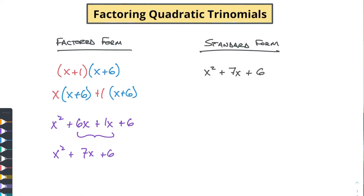How are we going to work backwards to get from that standard form back to the factored form? Let's see how these different pieces were put together. The first thing to notice is that this end term — this six — came from the product of this one and this six. And this seven came from the sum of this six x and this one x: the six x came from x and six, and the one x came from this one and this x.